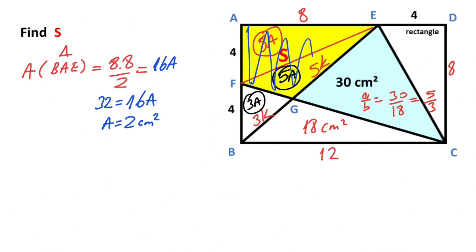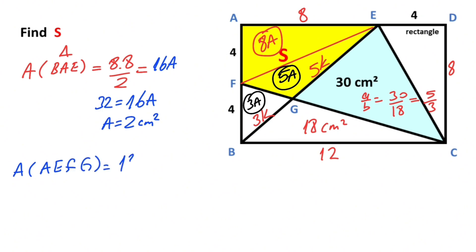Final step: notice that the yellow shaded area equals the area of AEFG, which equals 13 times capital A. So the area of the yellow shaded region equals 26 centimeters squared. Thanks for watching! If you enjoyed this, please like and subscribe to my channel. Take care and bye!